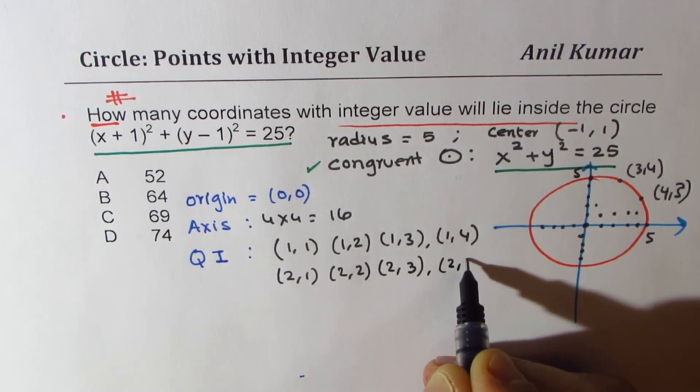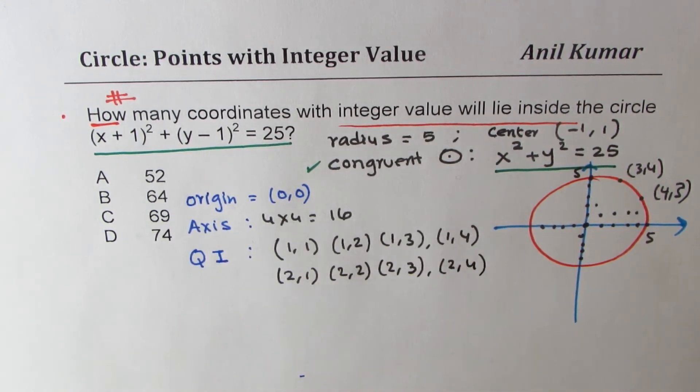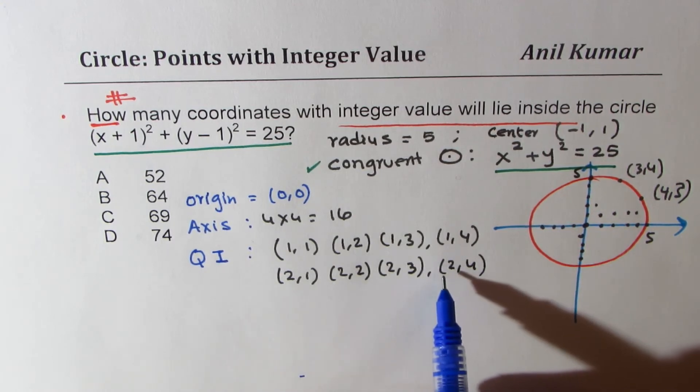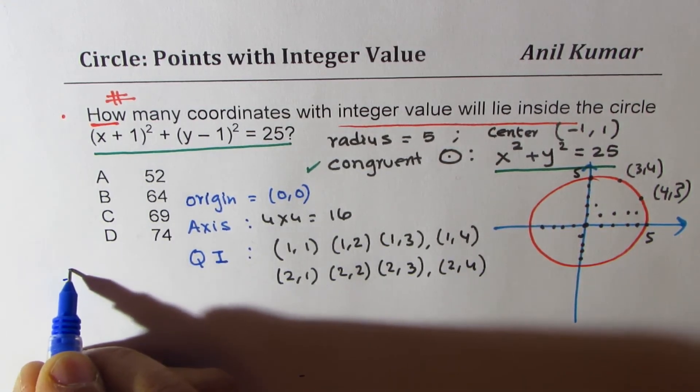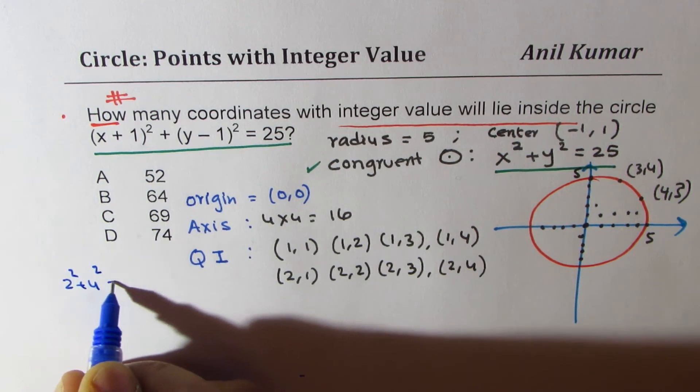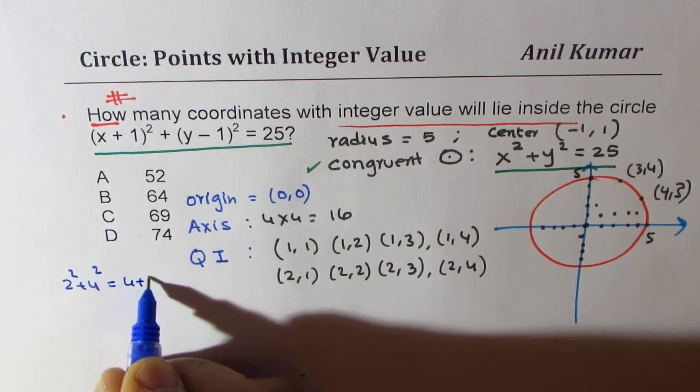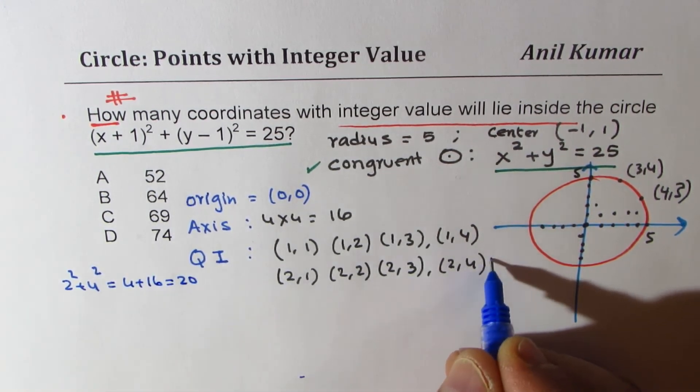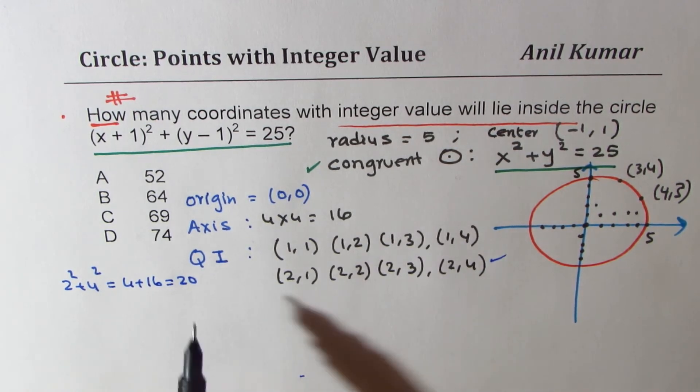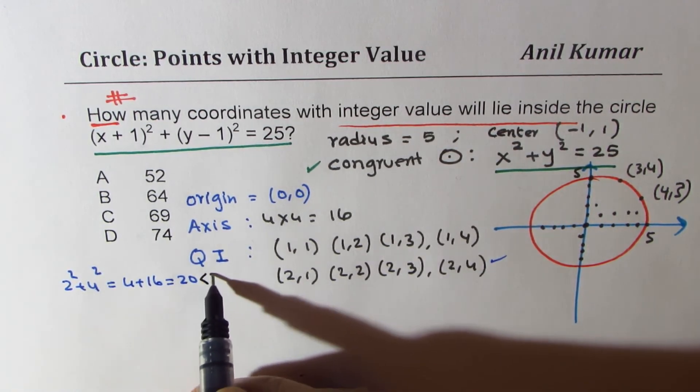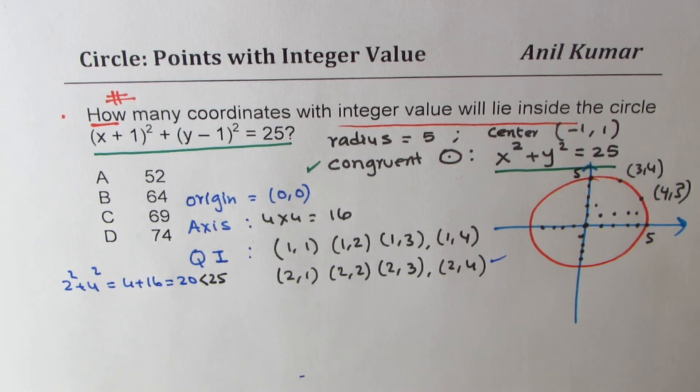And whether (2, 4) will be on it or not, you could do a simple calculation, which is 2² + 4². So that gives you 4 + 16, which is 20. So it is inside. So it qualifies.